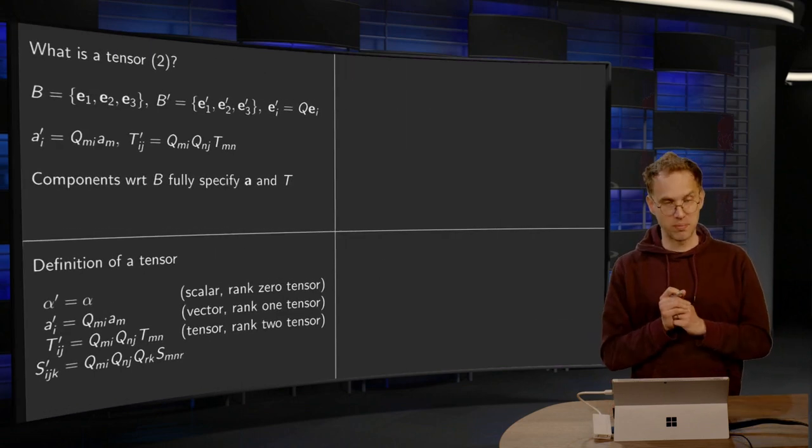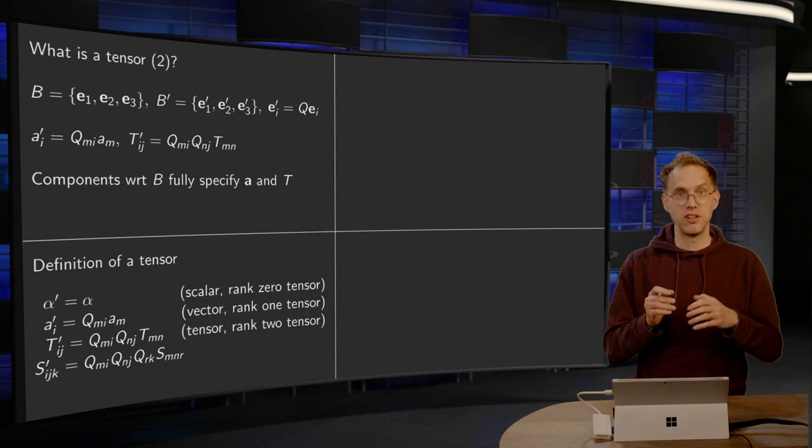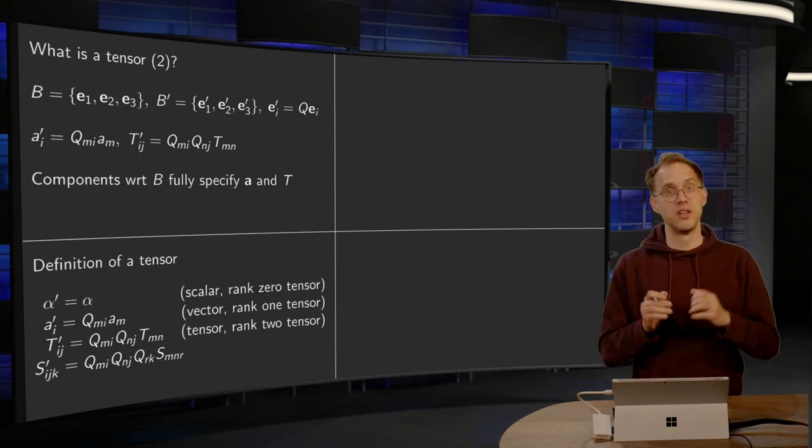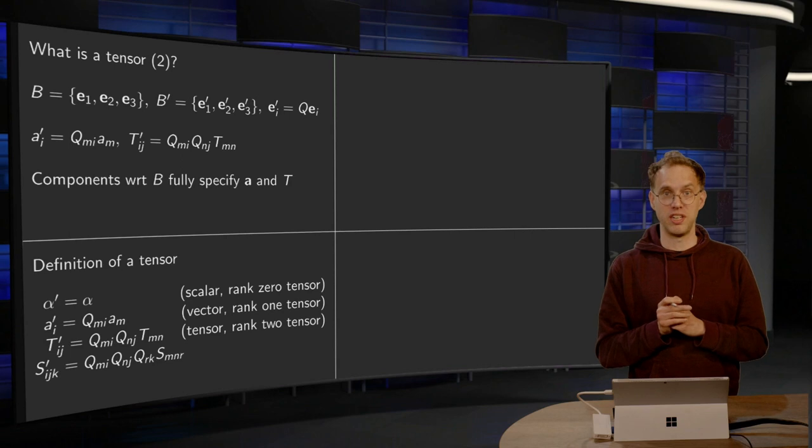And then, the definition of a tensor. We have seen that if we transform a scalar, alpha prime, you just get alpha. Nothing happens. So a scalar, we will call it a zero order tensor.